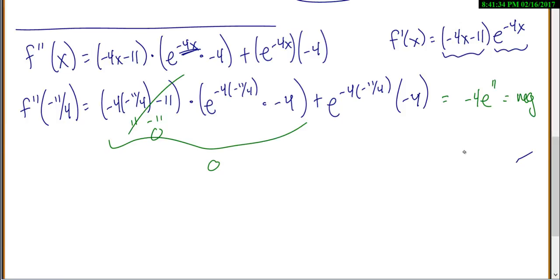So negative, a negative second derivative means that you're concave down, which means that you look like this, and if you look like that, then that point would have to be a maximum.